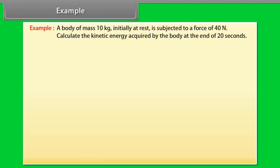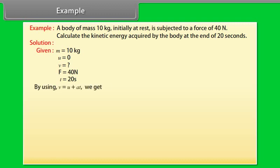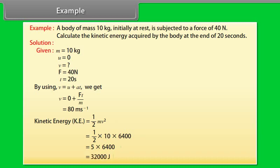Example. Let's take an example of kinetic energy. A body of mass 10 kg initially at rest is subjected to a force of 40 N. Calculate the kinetic energy acquired by the body at the end of 20 seconds. Let's see the solution. Given values are M equals 10 kg, U equals 0, F equals 40 N, T equals 20 seconds. By using V equals U plus AT, we get V equals 80 m per second. Kinetic energy equals half mv square. On calculating, we get kinetic energy equals 32,000 joules.